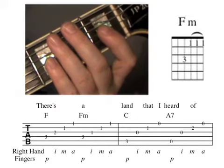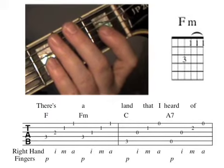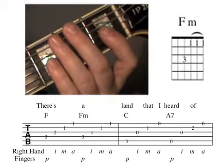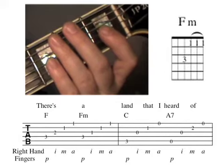The second chord in measure 5 is F minor. This chord shape is similar to F but you have to bar three strings.